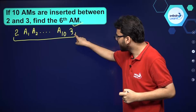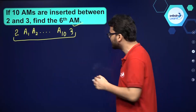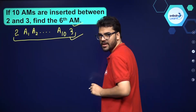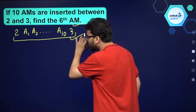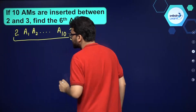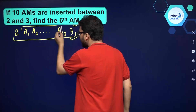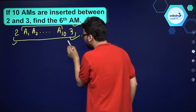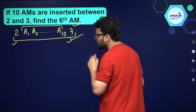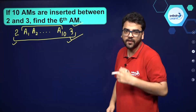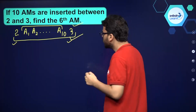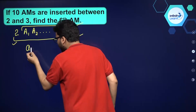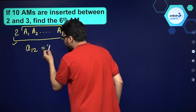You can see the last term is 3, and the total number of terms is what? 10 arithmetic means plus 1 plus 1. So total number of terms is 12. So we can say that A12 is equal to 3.